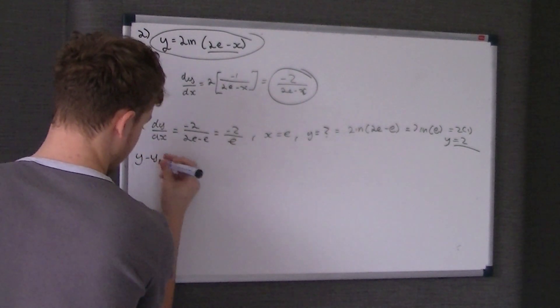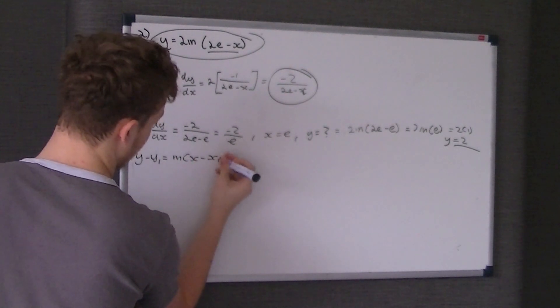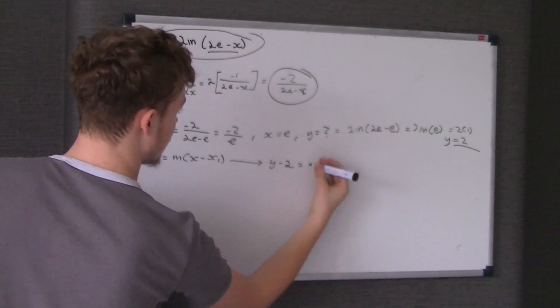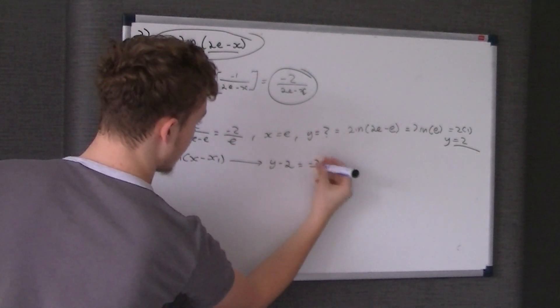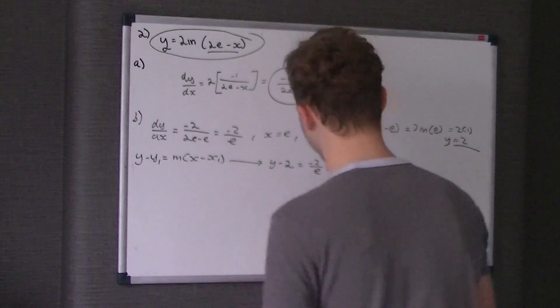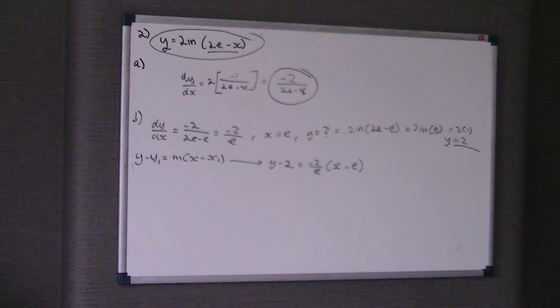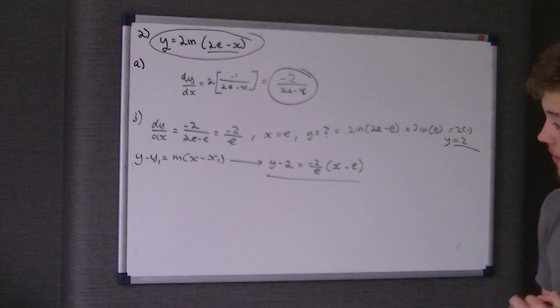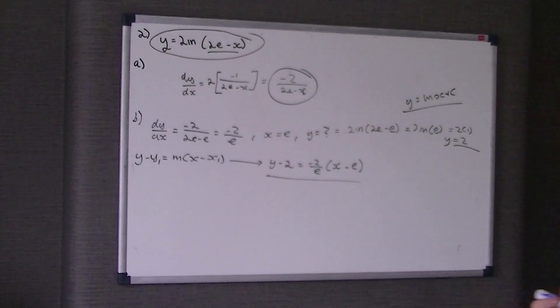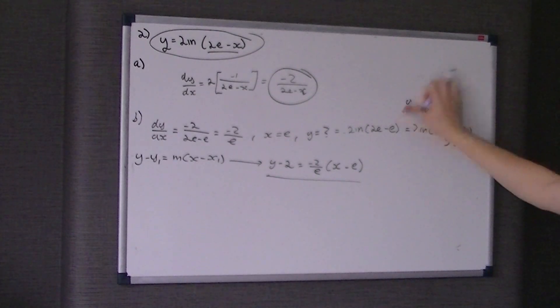Always write y take y1 equals m bracket x take x1 and sub in what you've got. So we know y take y1 is 2, y take 2 is equal to the gradient which we said was minus 2 over e, bracket x take x1, x1 being e. Because it's not said in any specific form, they've just left it as that.